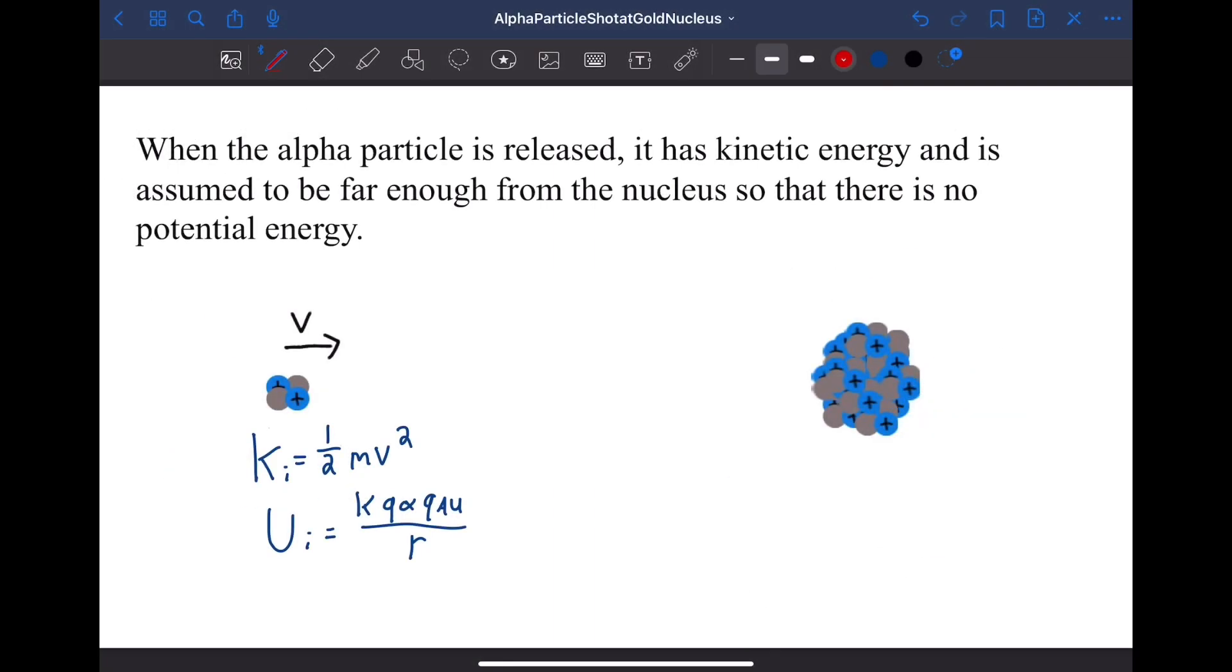When the alpha particle starts off, it has kinetic energy of one-half mv squared, but it doesn't have any potential energy. That's because it's assumed to be far away from the gold nucleus. Since this distance is assumed to be very large, the potential energy can be assumed to be zero.